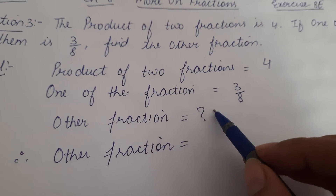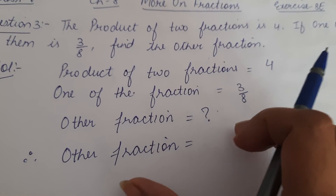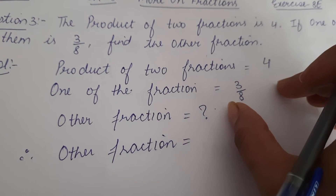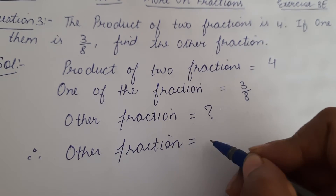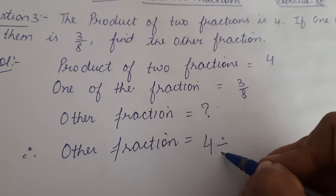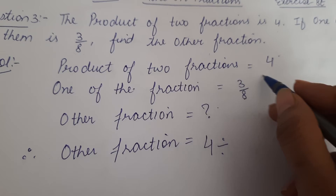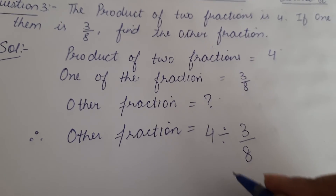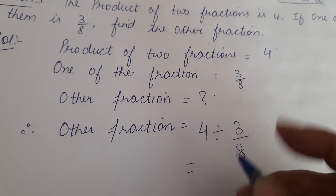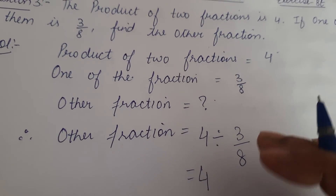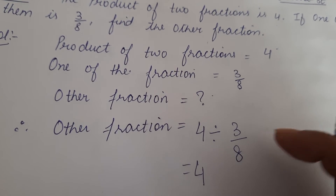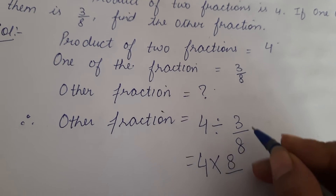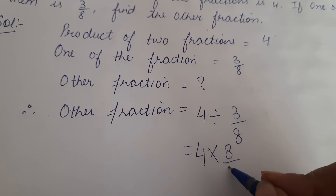To find the other fraction, we will divide the product of two fractions by one of the fractions. So we divide four by three by eight. Instead of dividing, we multiply by the reciprocal of the number. The reciprocal of three by eight is eight by three.